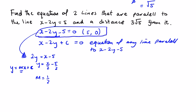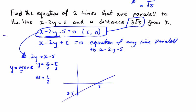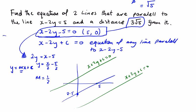The distance away from this point is 3 root 5. Sketching: we have the point (5, 0) with slope of a half, and the two parallel lines we're looking for are a distance of 3 root 5 away on either side, both with the equation x minus 2y plus c equals 0 where c can be positive or negative.